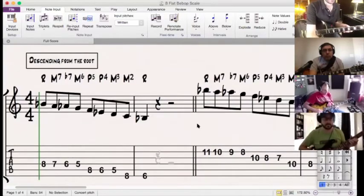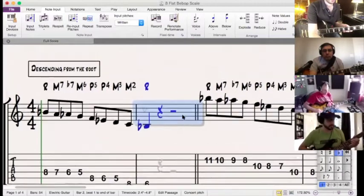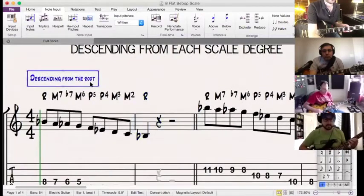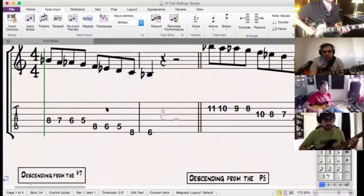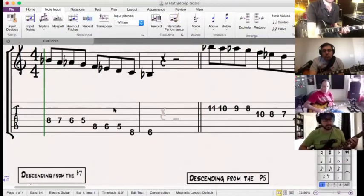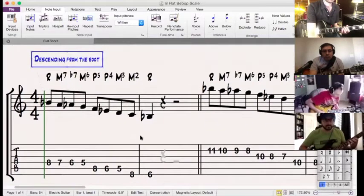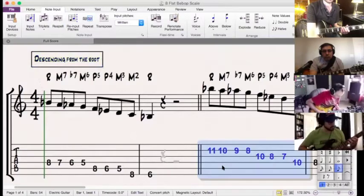The first step was kind of just running the bebop scale off of each note, descending from the root. So we have... here it is from the root, up an octave.